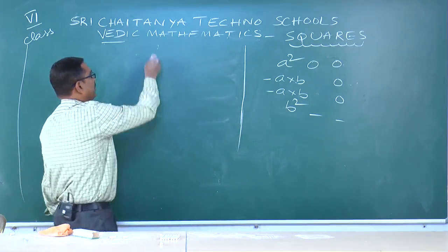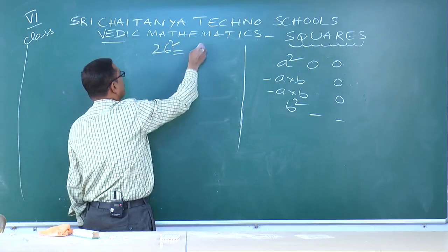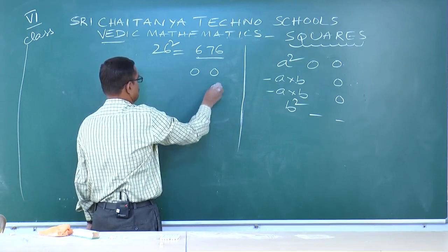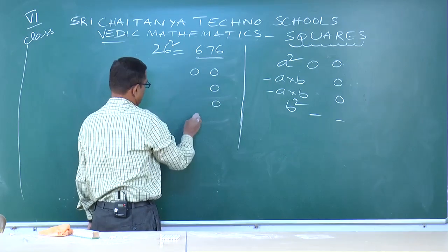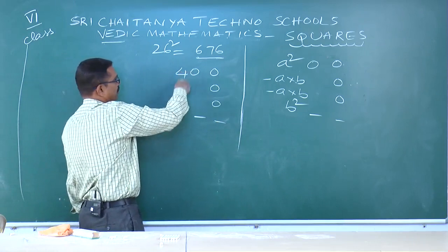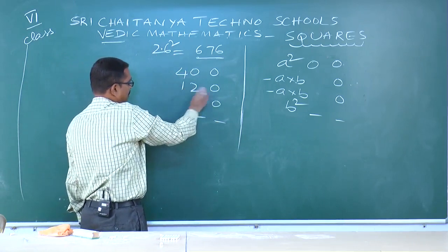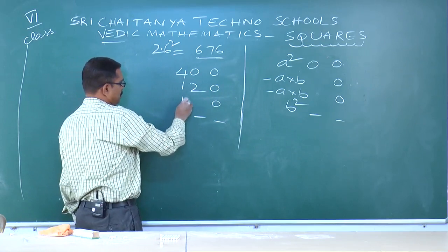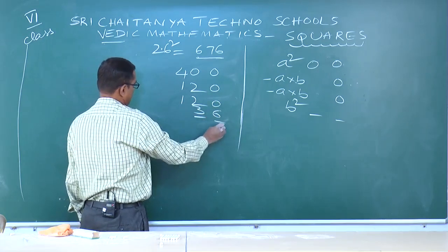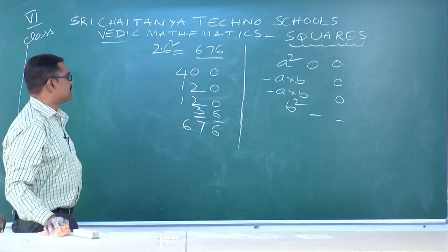Next: 26² = 676. Use formula: double-zero, single-zero, single-zero, dash-dash. a²=2²=4, a×b=2×6=12, a×b=12 again, b²=6²=36. Add all — answer is 676.